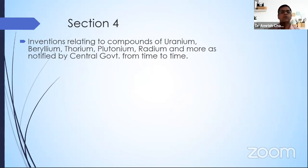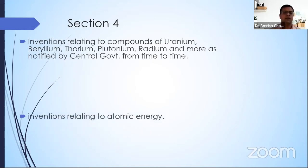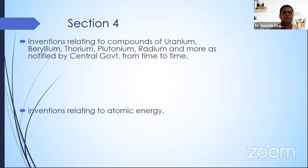Section 4 states that any work related to atomic energy that could threaten Indian security cannot be patented. Therefore, work on uranium, beryllium, thorium, or similar materials cannot be patented under Section 4.